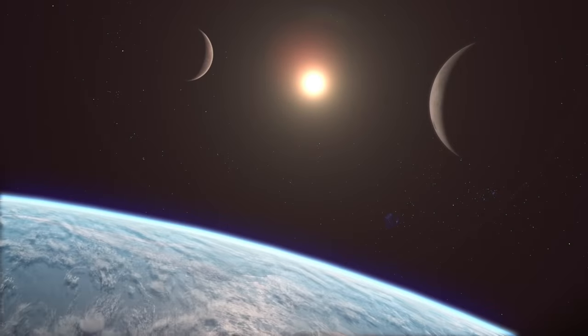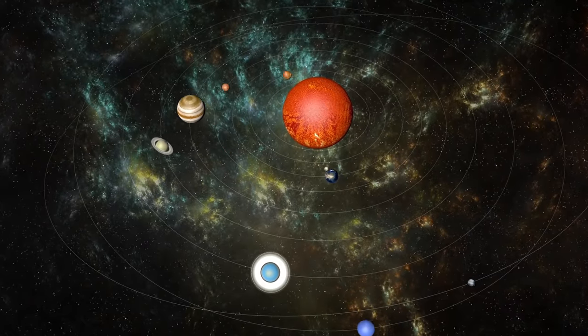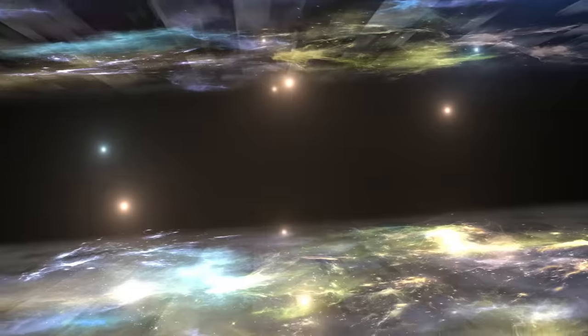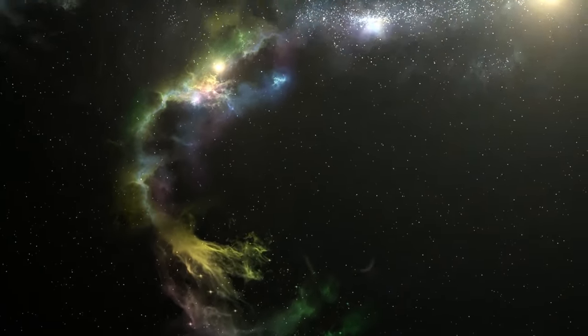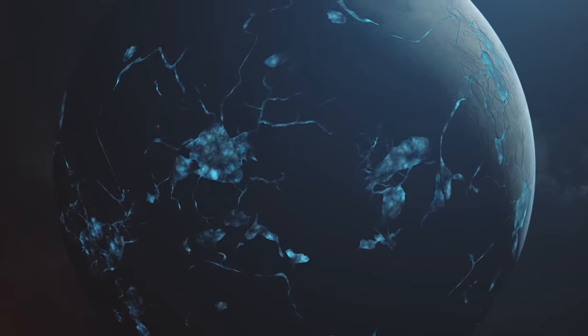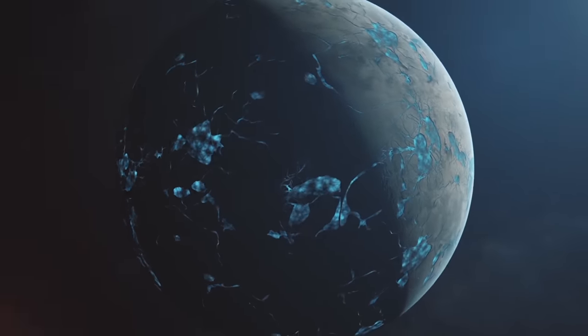Our solar system is a strange place, with its four giant worlds and four smaller planets. To scientists, this looks odd, as if something was missing. And what are the chances that astronomers working centuries apart repeatedly come to the exact same conclusion? There is something there.